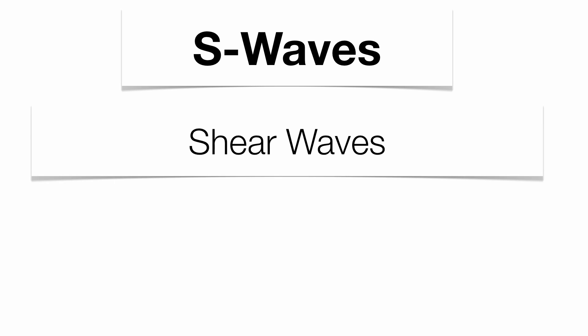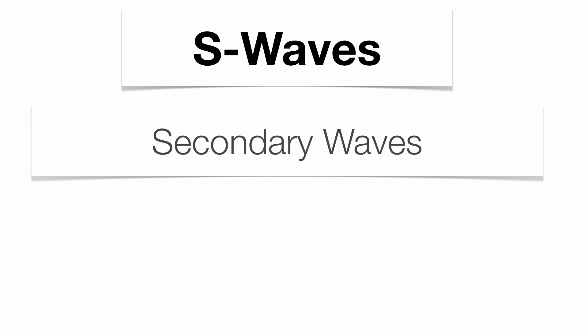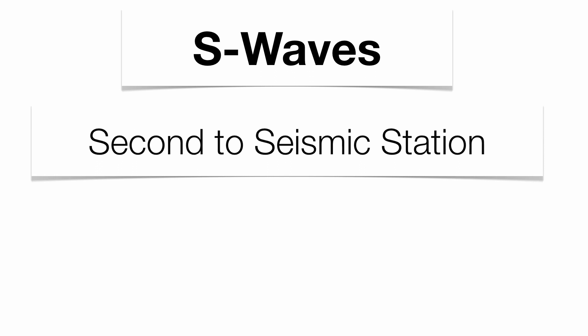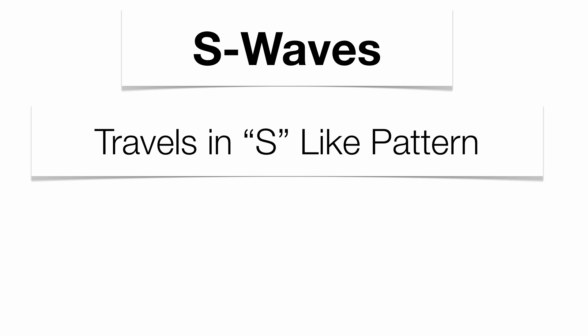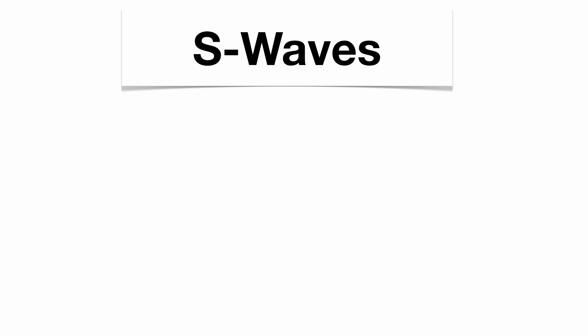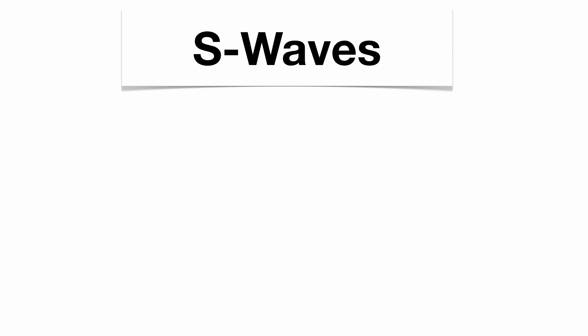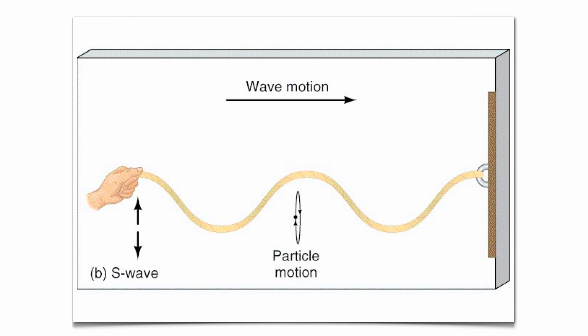The S waves are shear waves. They're secondary and slower. They travel through solids only, and they travel in an S-like pattern. They're slow, like a Saturn. Think about the two cars — the Porsche versus the Saturn. There's your S pattern with the rope: you can see how it's going to travel in an S-like pattern from the person's hand to the wall.